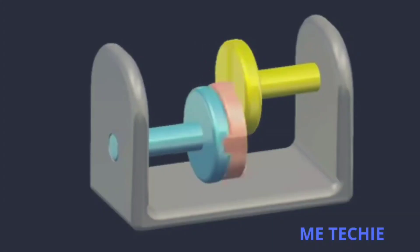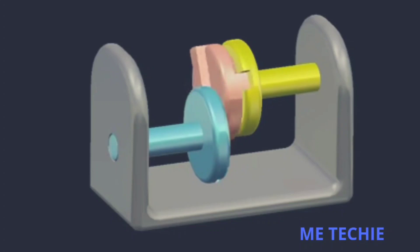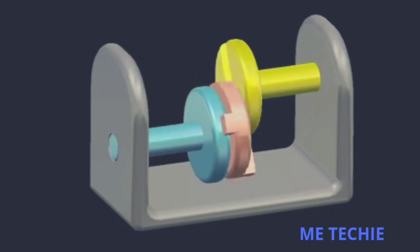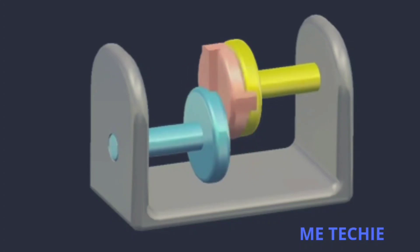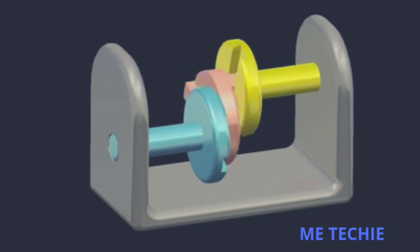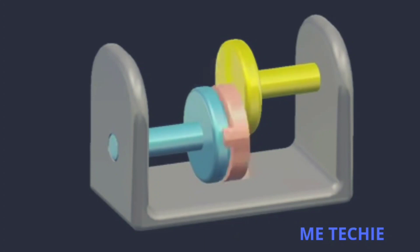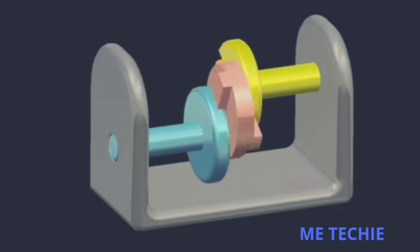As the driving shaft moves, motion is transmitted through the intermediate link (link 4) via the diametrical projections fitting into the flange slots, and then to the driven shaft. This allows power to be transmitted from one parallel shaft to another that is a small distance apart. The intermediate link with its projections can be seen in the working diagram of Oldham Coupling.